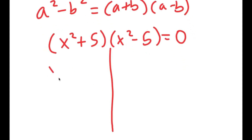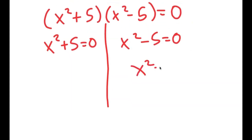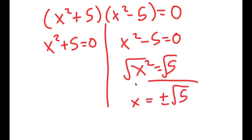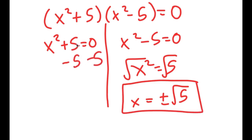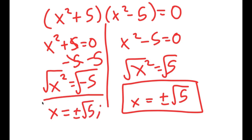This gives two equations: x squared plus 5 equals 0, and x squared minus 5 equals 0. For x squared minus 5 equals 0, I get x squared equals 5, and taking the square root gives x equals positive or negative the square root of 5. For x squared plus 5 equals 0, subtracting 5 gives x squared equals negative 5, so taking the square root gives x equals the square root of 5 times i. These are my four solutions to this equation.